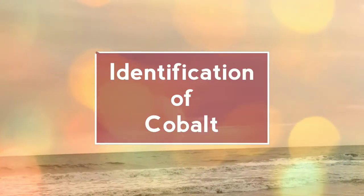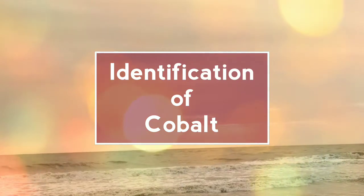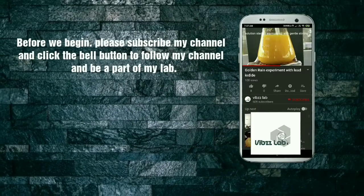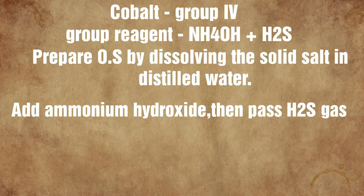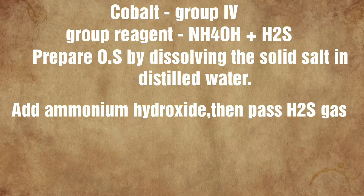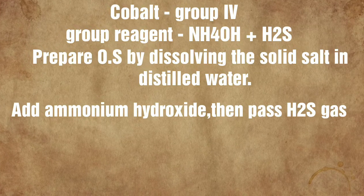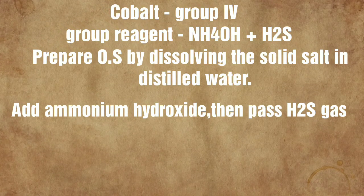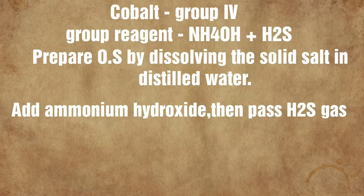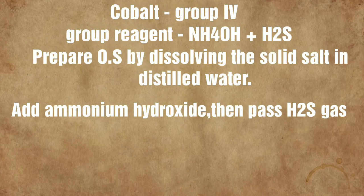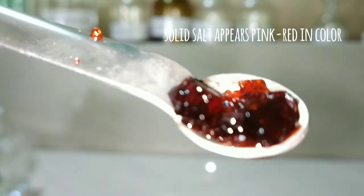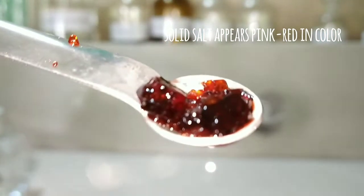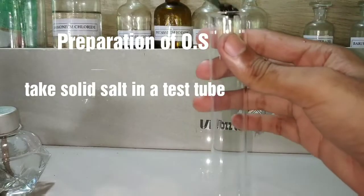Today we would be doing the identification of cobalt ions. Cobalt belongs to group 4 and the group reagent is ammonium hydroxide with hydrogen sulfide. We first prepare the solution and then react it with the group reagent. First we inspect the solid salt — the salt is bright red in color and it is hygroscopic.